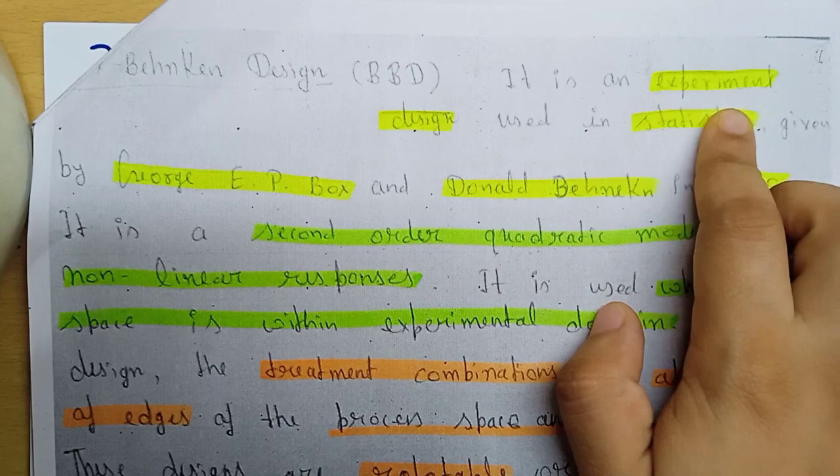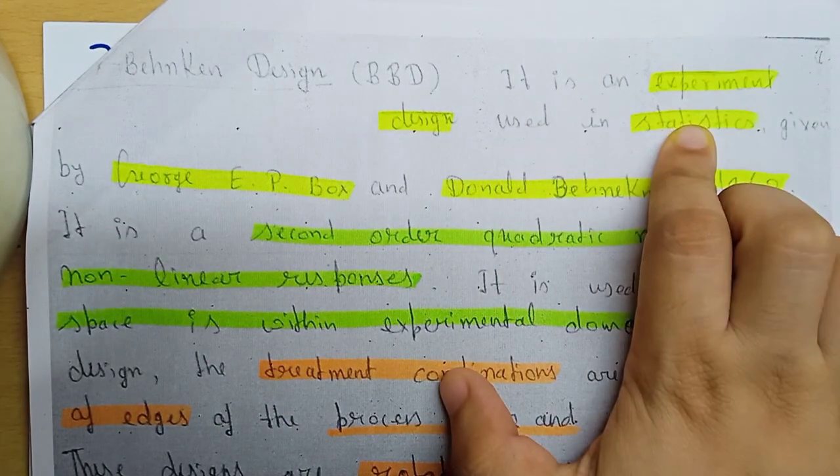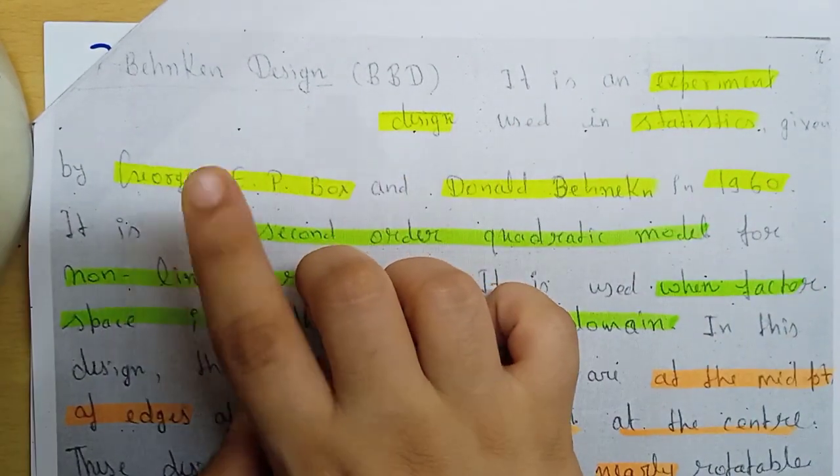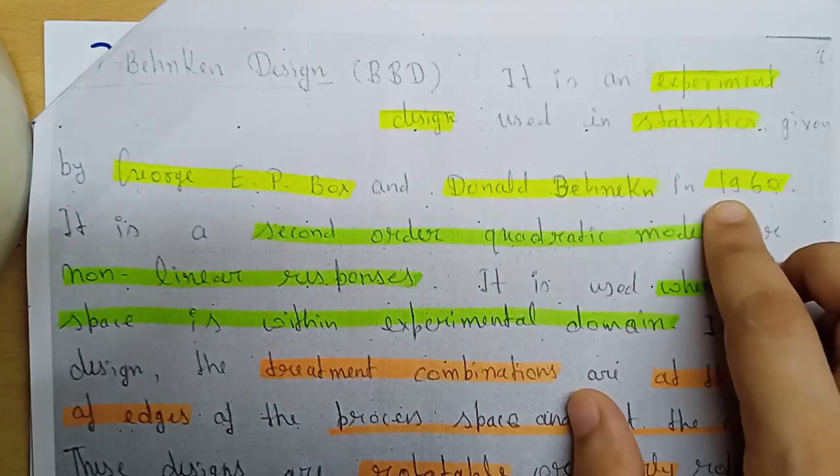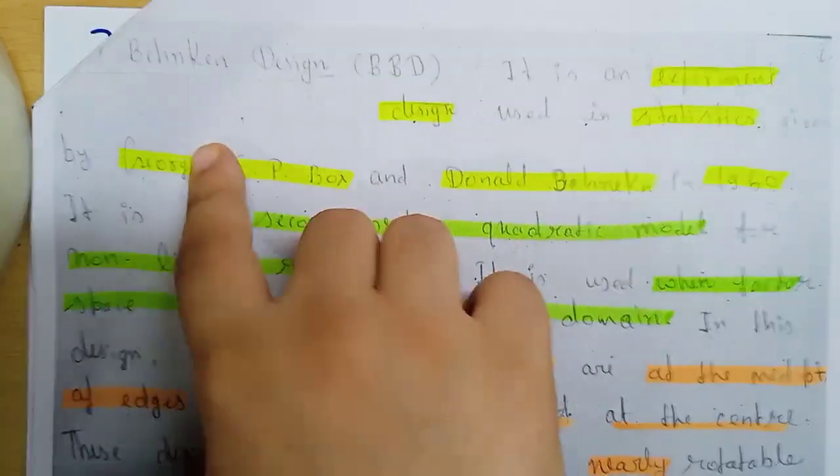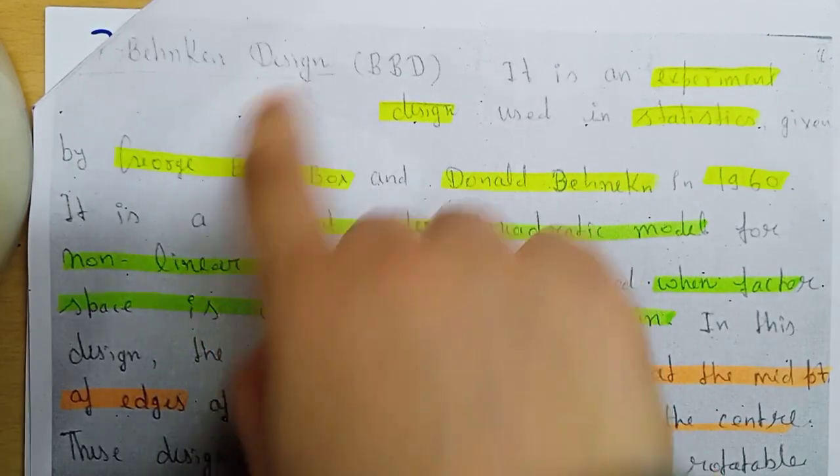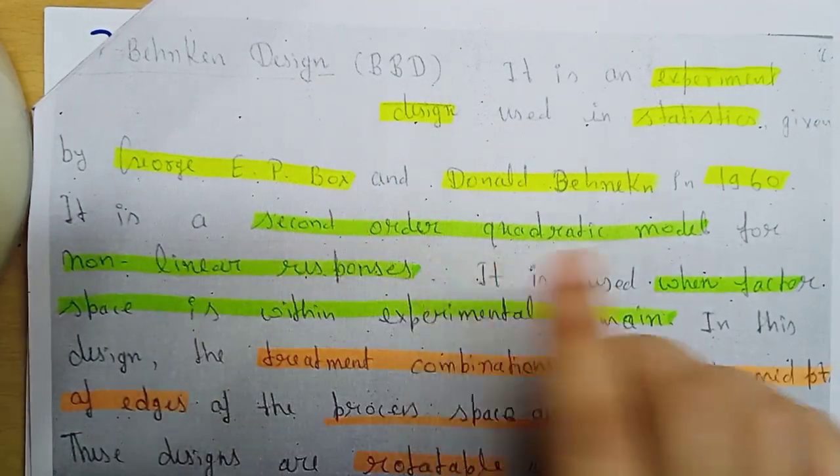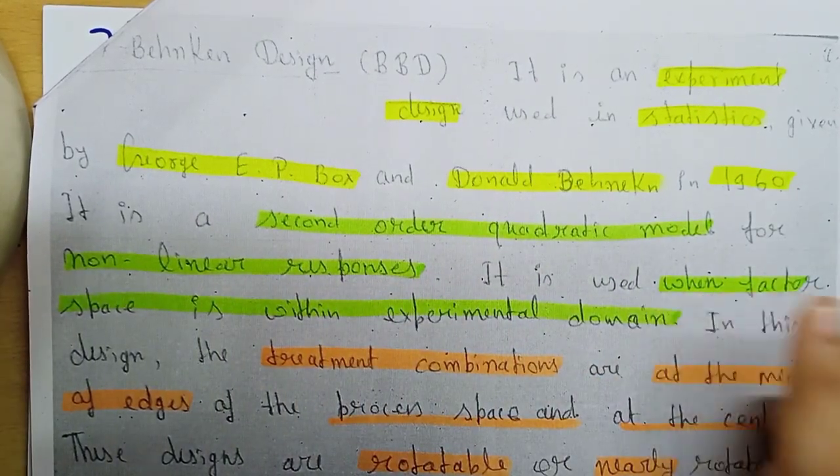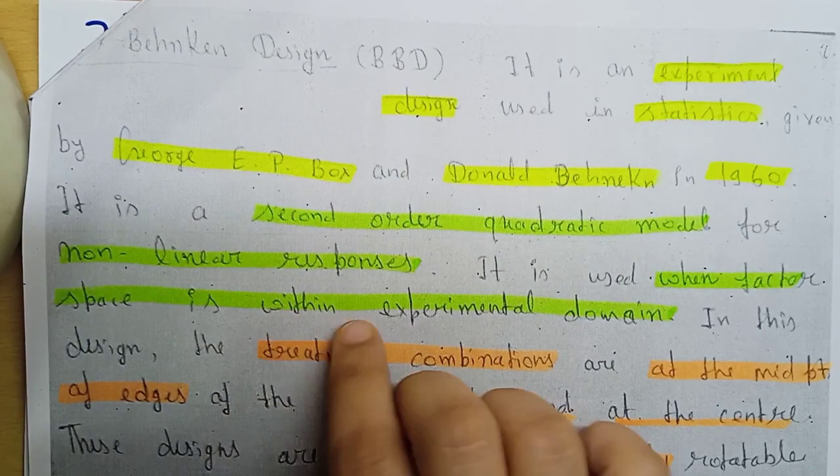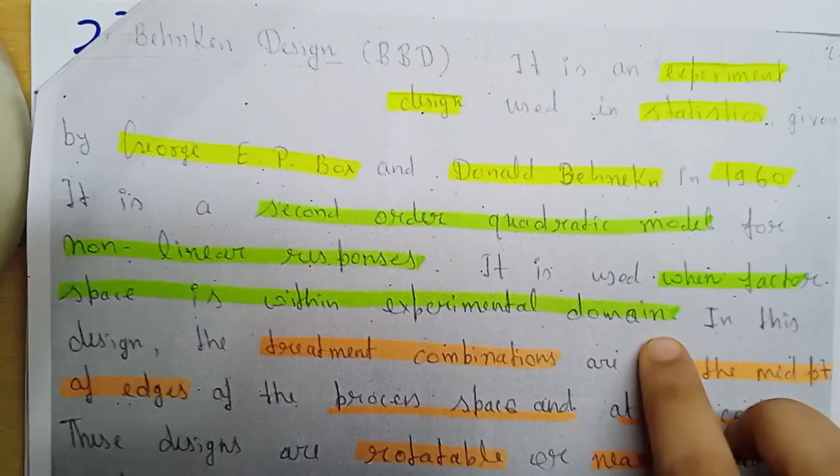BBD is an experimental design used in statistics. George E.P. Box and Donald Behnken developed it in 1960, hence the name Box-Behnken design. This is a second order quadratic model for non-linear responses and we use it when factor space is in experimental domain.